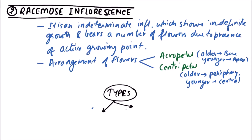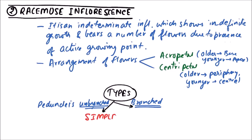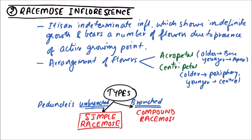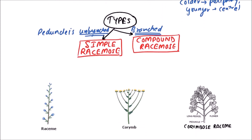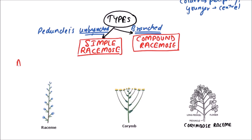Racemose inflorescence can be classified into two types on the basis of branching of the peduncle — whether the peduncle is unbranched or branched. If the peduncle is unbranched, it is a type of simple racemose, and if the peduncle is branched, it is a type of compound racemose. Now we will discuss the types of simple racemose inflorescence.